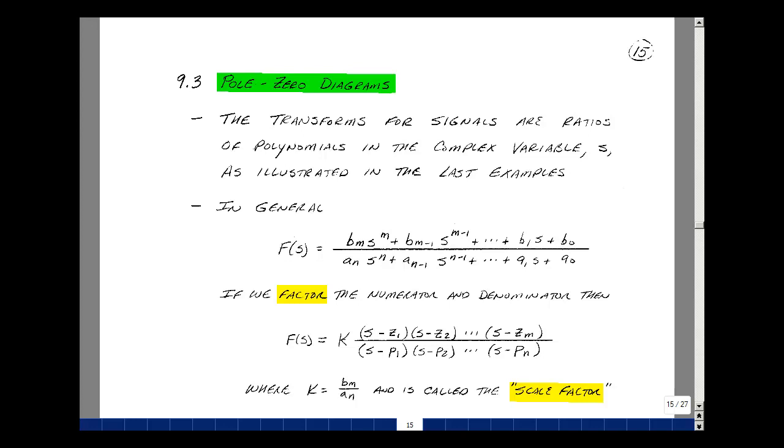This lesson deals with pole-zero diagrams. You can find these notes in the ECE 202 ebook in chapter 9, starting on page 15. As we've shown in our last videos, the transforms of signals are ratios of polynomials in the complex variable s.